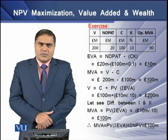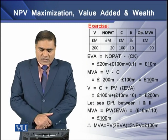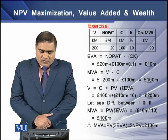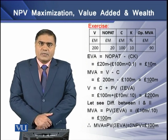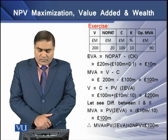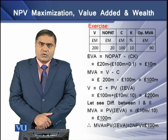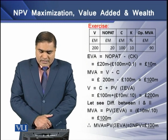To develop a relation between MVA, present value of EVAs, and NPVs, we have a numerical exercise in which the market value is 200 million, NOPAT is 20 million, capital is 100 million, cost of capital is 10%, and opening market value of EVAs is given. To determine EVA, we deduct the cost of capital of 10 million from the NOPAT of 20 million, and the resulting EVA is 10 million dollars.